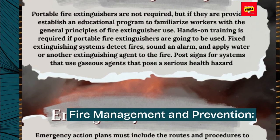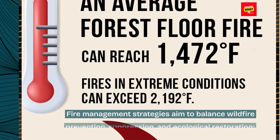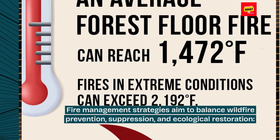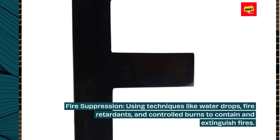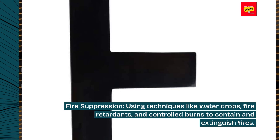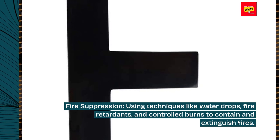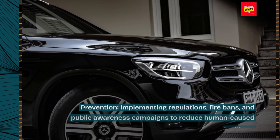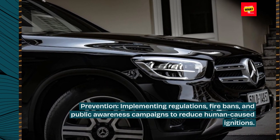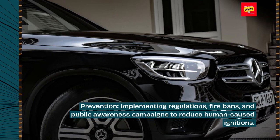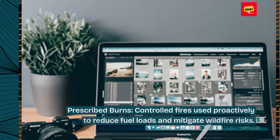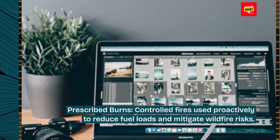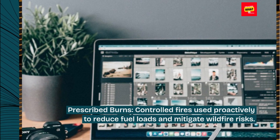Fire Management and Prevention: Fire management strategies aim to balance wildfire prevention, suppression, and ecological restoration. Fire suppression uses techniques like water drops, fire retardants, and controlled burns to contain and extinguish fires. Prevention involves implementing regulations, fire bans, and public awareness campaigns to reduce human-caused ignitions. Prescribed burns are controlled fires used proactively to reduce fuel loads and mitigate wildfire risks.